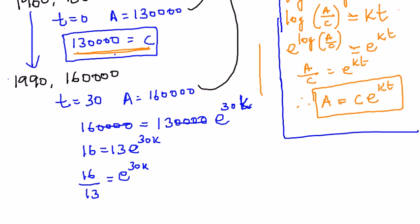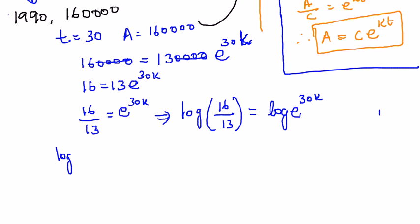Let's take log on both sides. I want to find out what k is, so in order to find k we are doing this. It becomes log of 16 by 13 is equal to log e power 30k. This becomes log of 16 by 13 is equal to 30k. Therefore we can write k is equal to 1 by 30 into log of 16 by 13.